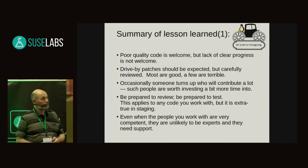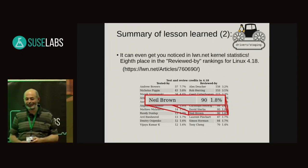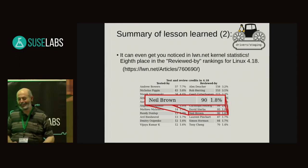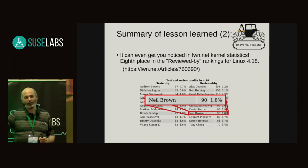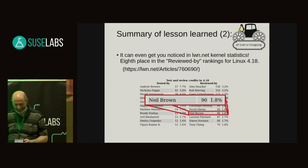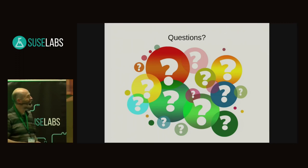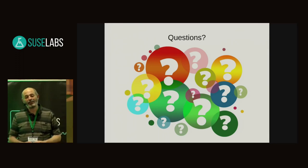One last little lesson learned: you can even get noticed in the Linux Weekly News kernel statistics. All my reviewed-by's for most of the GPIO stuff got me number eight — eighth place in the reviewed-by rankings. It's really easy to get reviewed-by: there aren't nearly as many reviewed-by's as there are, for instance, signed-off-by's or From's.